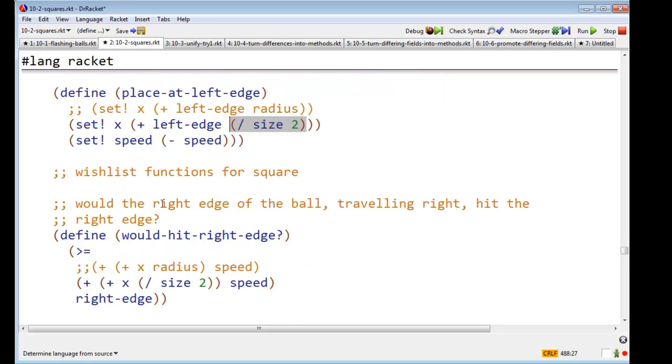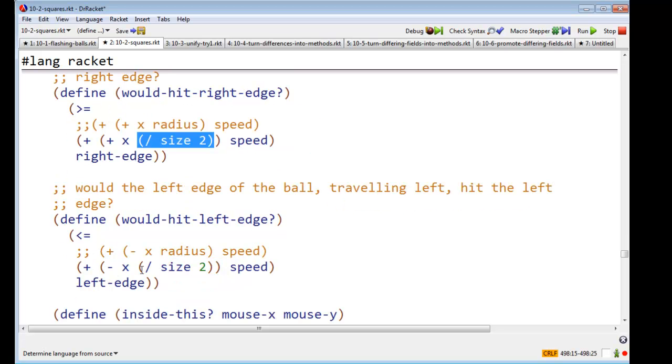Similarly, we have the functions would-hit-right-edge and would-hit-left-edge. And before we said, would the radius after the next tick get beyond the right edge? And now we say, we're not interested in the radius. We're interested in half the size. And similarly, instead of the radius, we're interested in half the size. That's the distance from the center of the square to either its left or right edges.